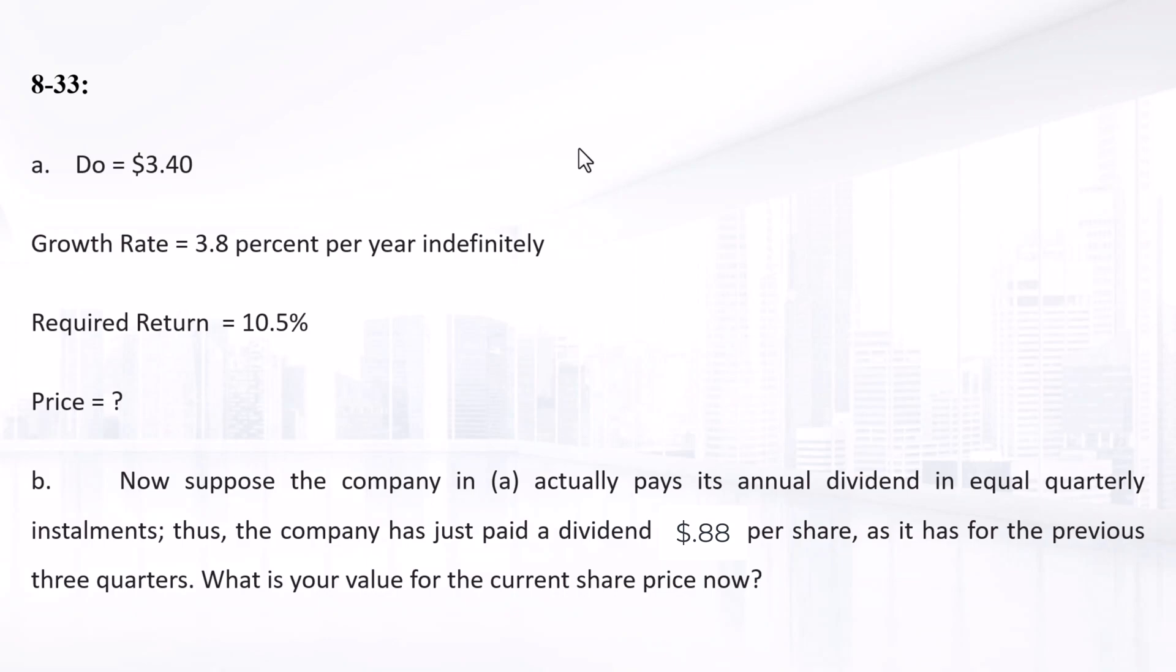The second requirement is: now suppose the company actually pays its annual dividends in equal quarterly installments. Thus, the company just paid a dividend of $0.88 per share as it has for the previous three quarters. What is your value for the current share price now?